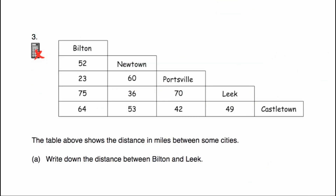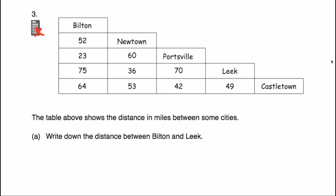Question number 3. We've got some places — again places I've made up: Bilton, Newtown, Portsville, Leek and Castletown. The table shows the distances in miles between some cities — miles and not kilometres. Part A says write down the distance between Bilton and Leek. Bilton and Leek — if you come down and across, you'll see that's 75 miles.